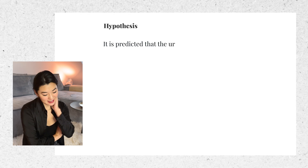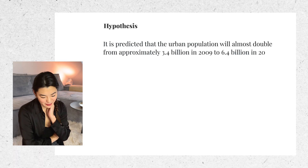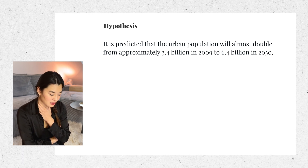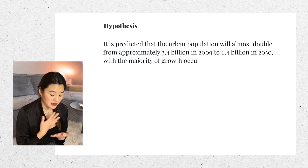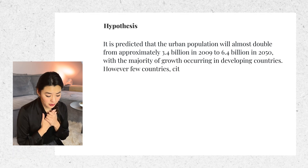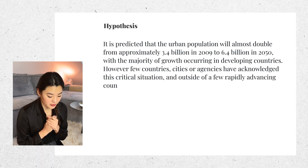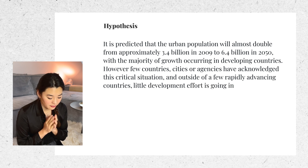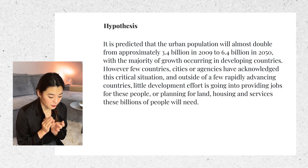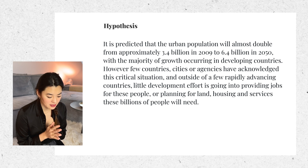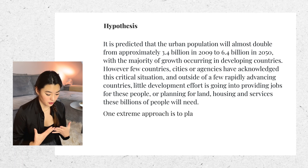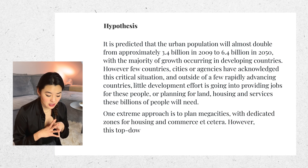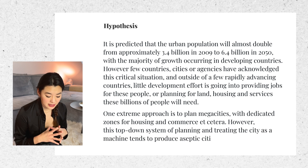Section two: Hypothesis. It's predicted that the urban population will almost double from approximately 3.4 billion in 2009 to 6.4 billion in 2050, with the majority of growth occurring in developing countries. However, few countries, cities, or agencies have acknowledged this critical situation, and outside of a few rapidly advancing countries, little development effort is going into providing jobs for these people or planning for the land, housing, and services these billions of people will need. One extreme example is to plan mega-cities with dedicated zones for housing, commerce, etc.